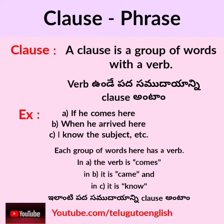In example A, the verb is 'comes.' In example B, the verb is 'came.' In example C, the verb is 'know.' Such groups of words that contain a verb are called clauses.